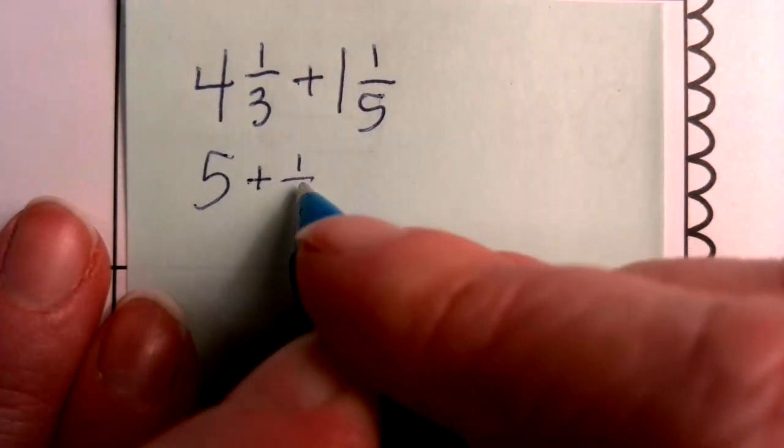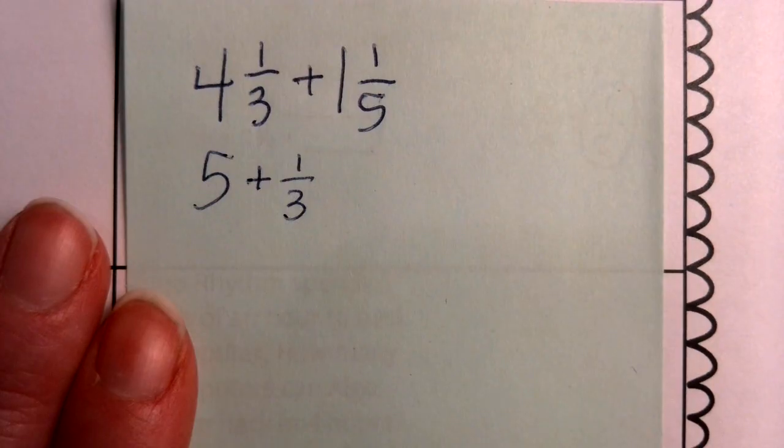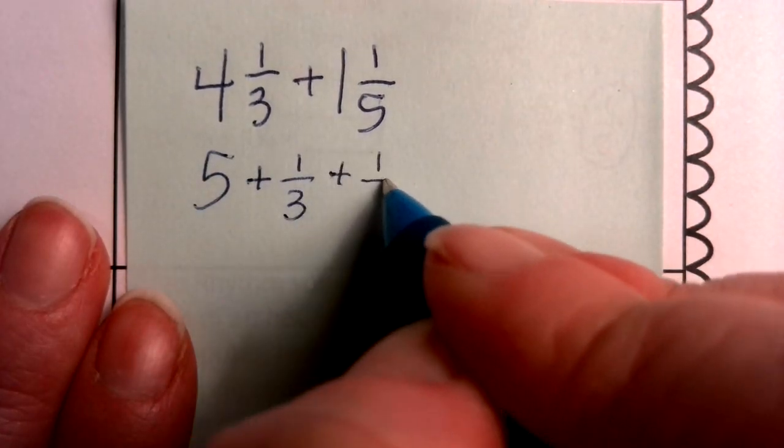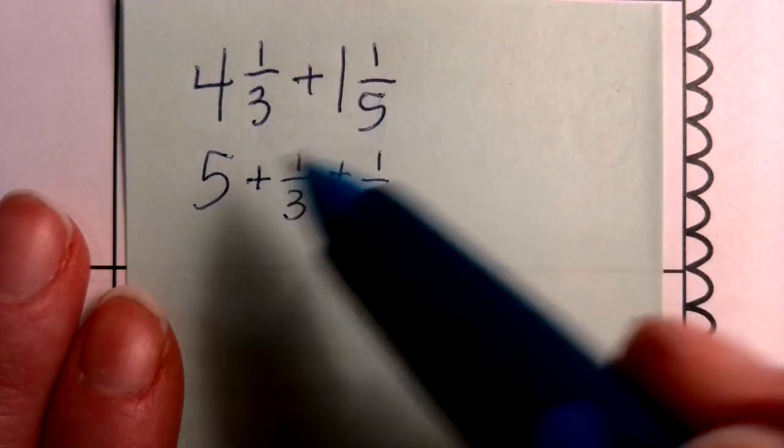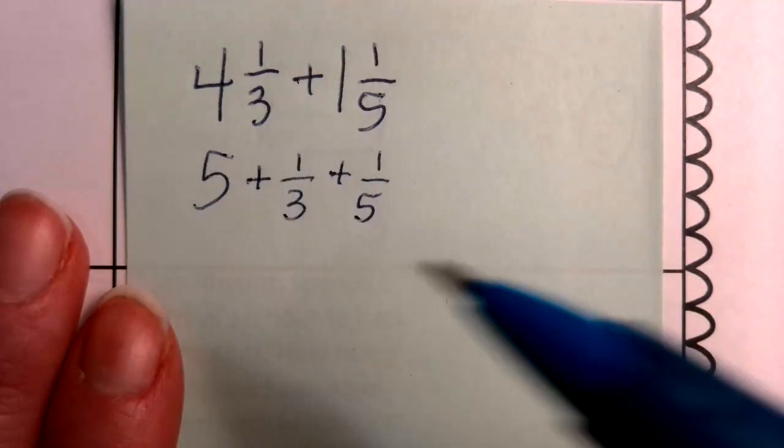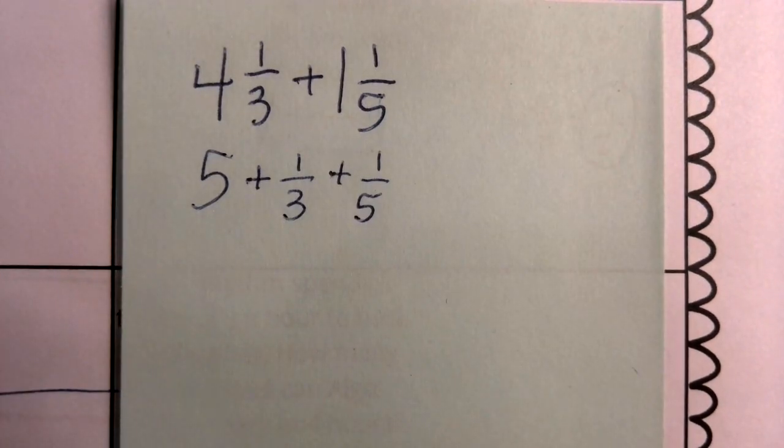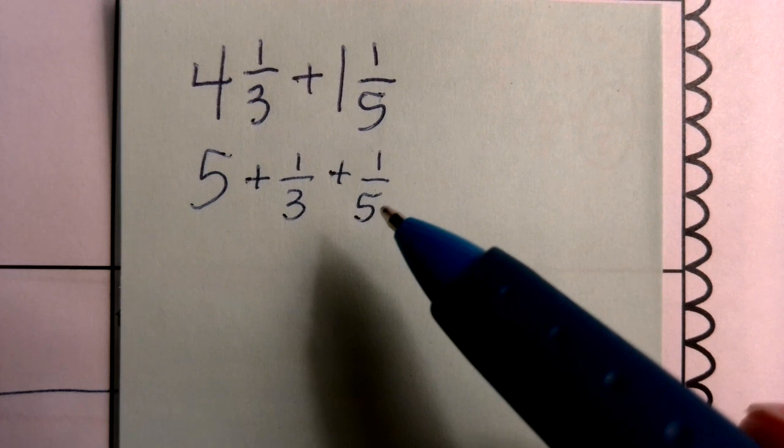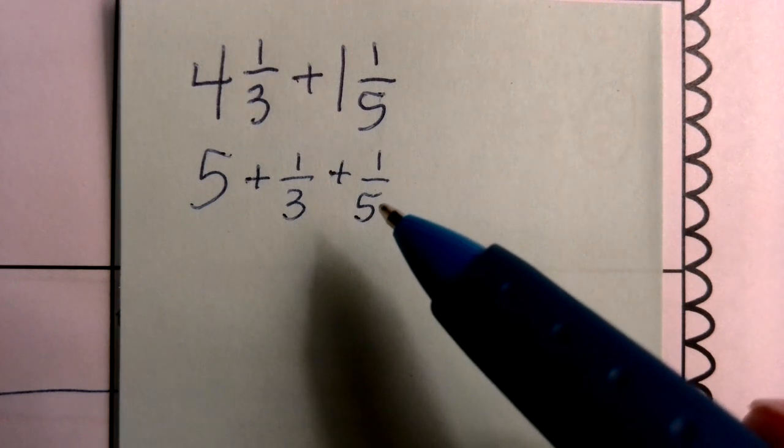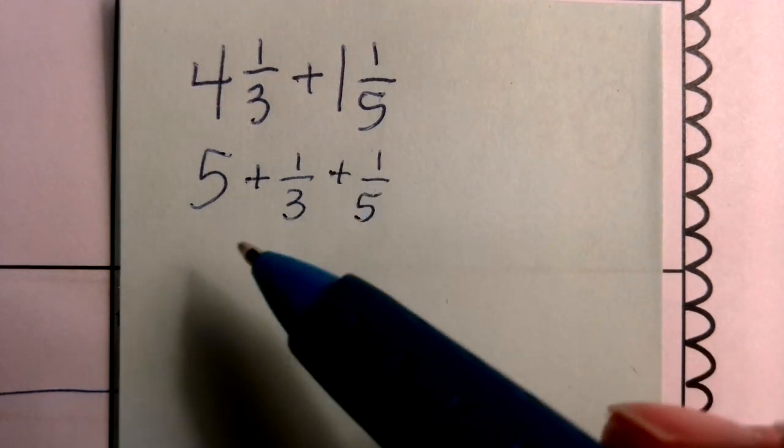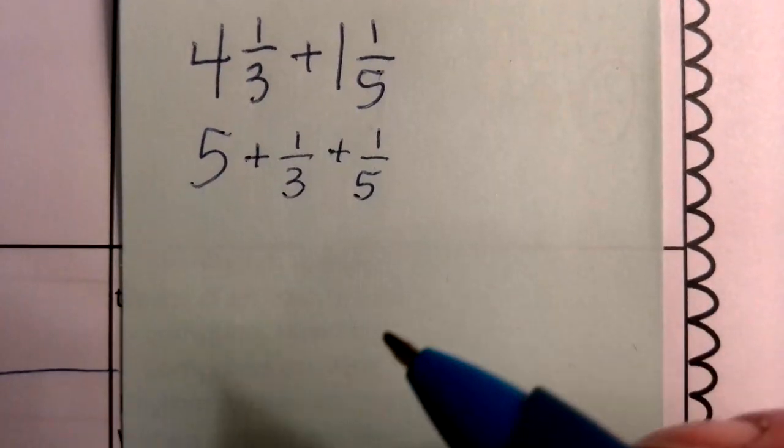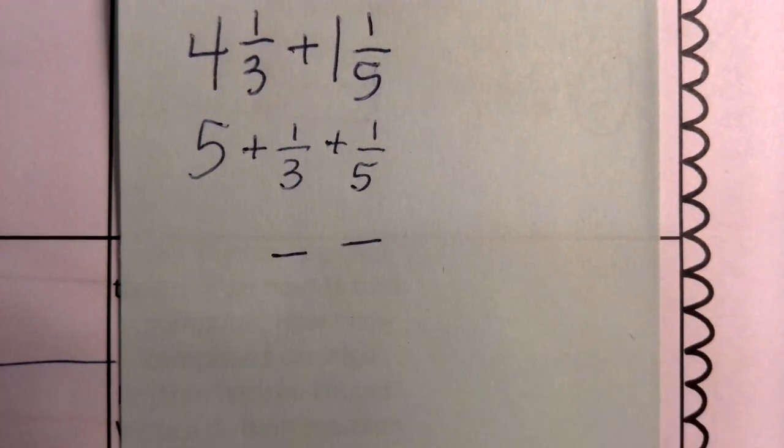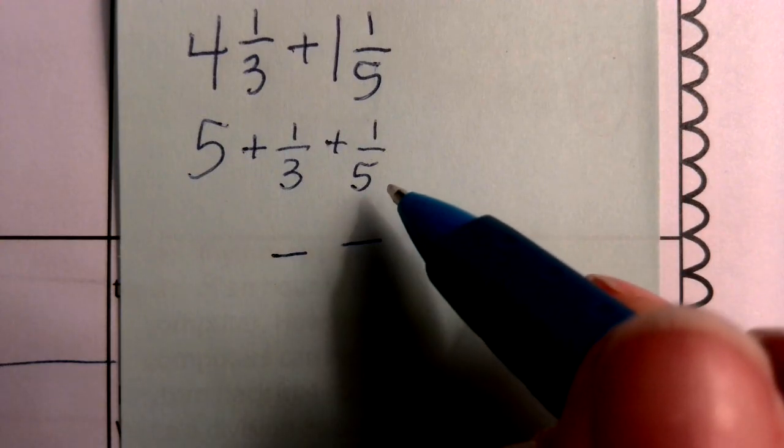So we are going to use this same strategy of getting to our equivalent fraction, but we're adding in also the fact that we have mixed numbers. So now I don't just have a proper fraction 1/3 plus a proper fraction 1/5. I also have this whole number 4 and this whole number 1. So first of all, what we did in class and what my students really liked was to go ahead and work with those whole numbers.